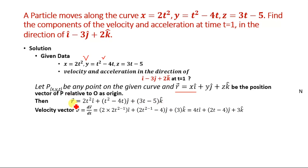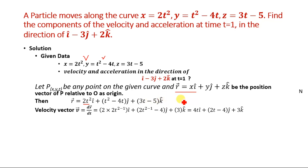Velocity is the time rate of change of displacement, so we take the derivative of the position vector r with respect to time. v = dr/dt. Differentiating: 2t² gives 4t, (t² - 4t) gives (2t - 4), and (3t - 5) gives 3 (the constant -5 vanishes). So v = 4ti + (2t - 4)j + 3k.